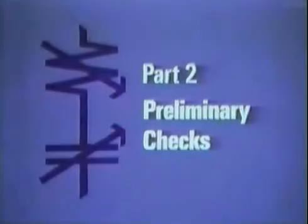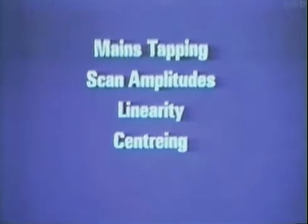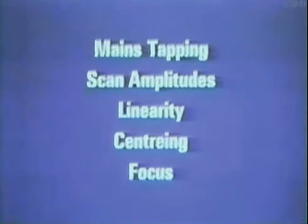From the signal reception outlined in part one, we move to preliminary checks and adjustments in part two. The procedure outlined in this and the following parts may be useful as a general guide. First, routine checks such as the setting of the mains tapping, proper scan amplitudes, linearity, centering and focus should be made. Any subsequent alterations to the shape of the basic black and white picture are liable to have a detrimental effect on the quality of convergence.